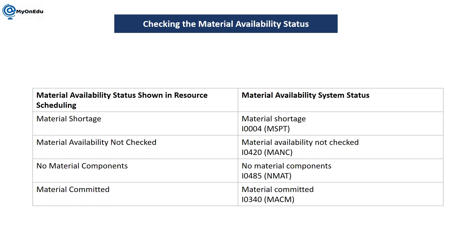For whatever component you have added, as per the configuration and your process, whenever you are planning some material component, at that same time it will set the system status of the order header. When we check material availability status, we can check with reference to the order header or a particular order operation — but it is the same thing because this status is driven from the order header.